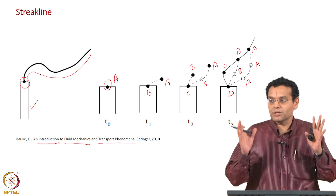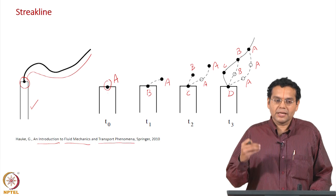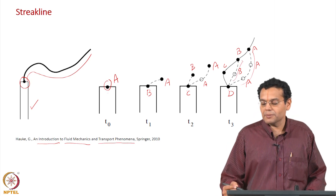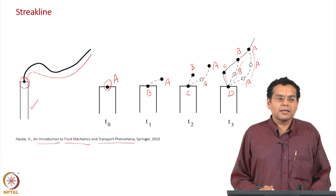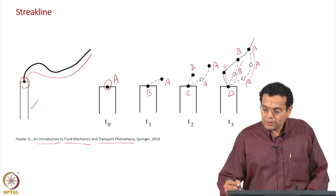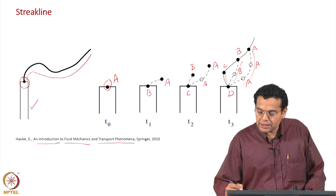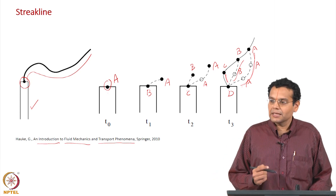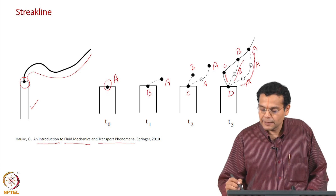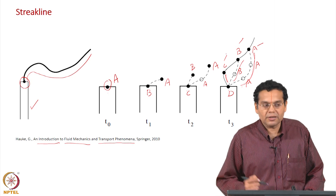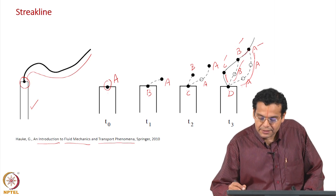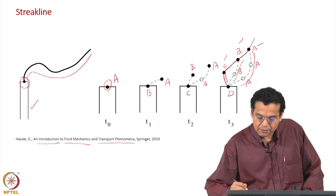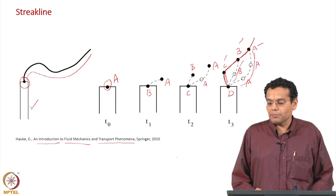We said visualization of flow patterns — when we draw a line, it should represent the velocity field. The path followed by each particle is determined by the local fluid motion. All of these are path lines, because a path line is for a particular fluid particle. So this is a path line for A, this is a path line for B, this is a path line for C. Now, what is the streak line? Connect all these endpoints of the path lines and you will get a streak line. This curve is the streak line, which is the endpoint of all the path lines.